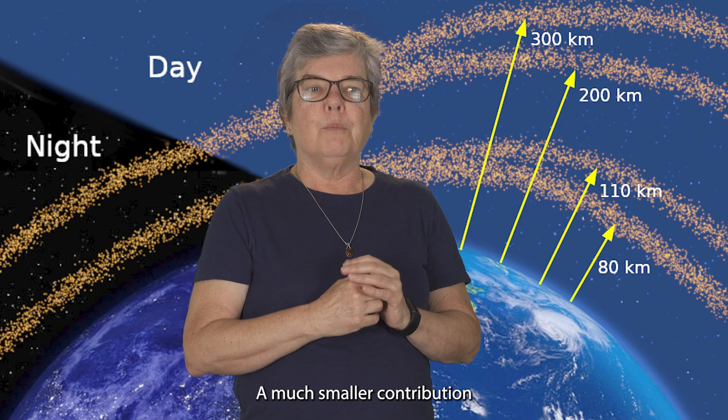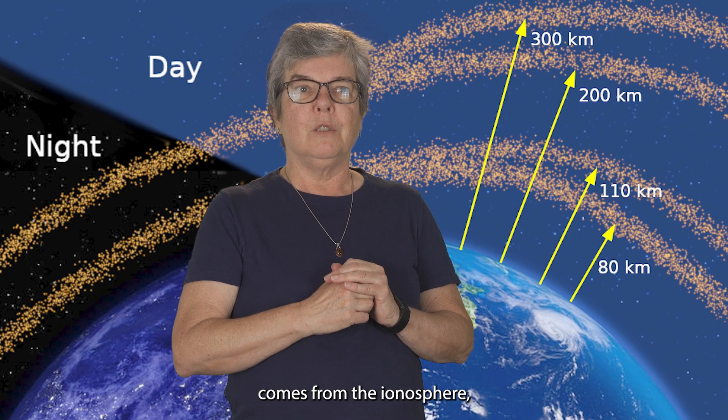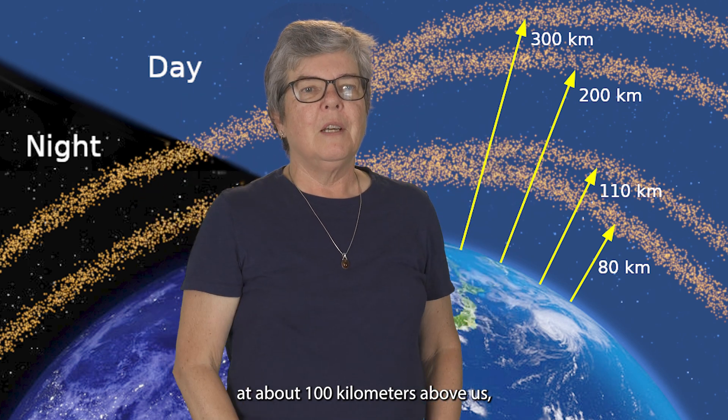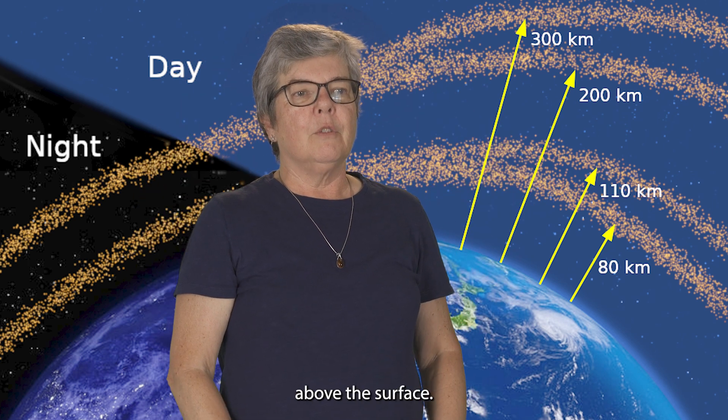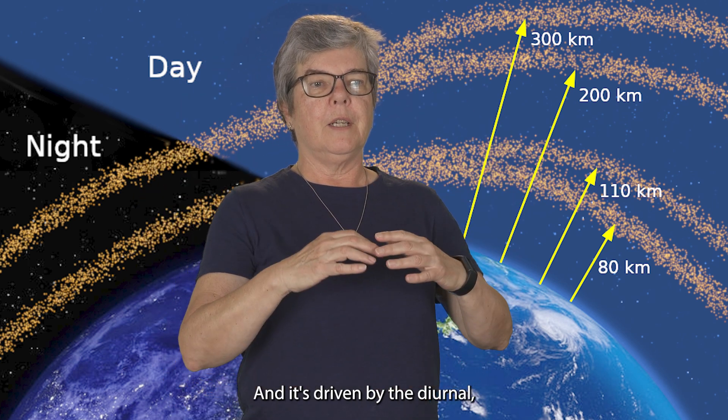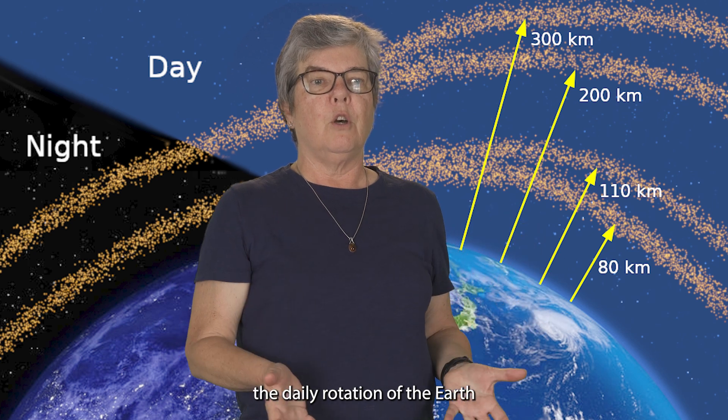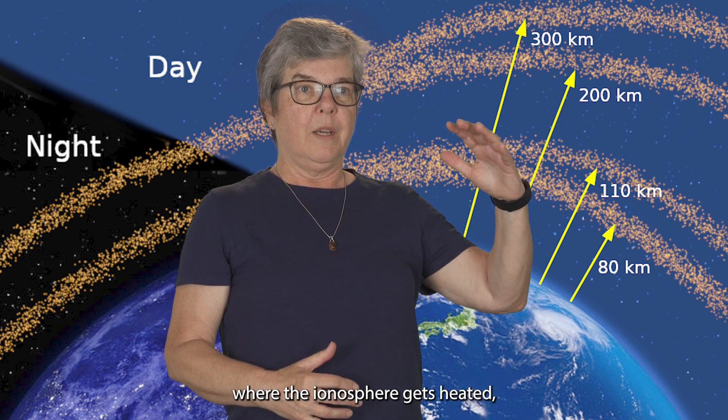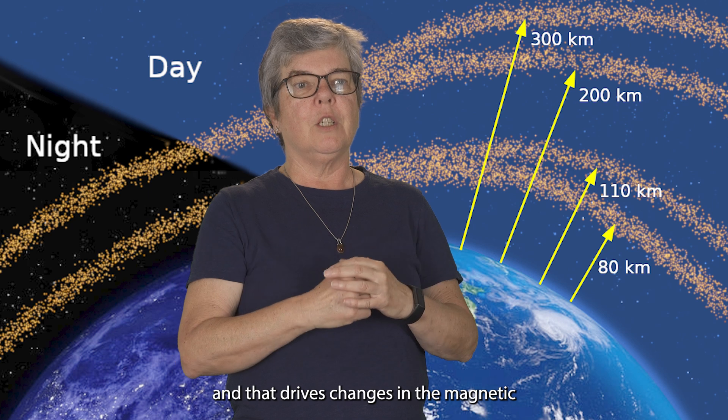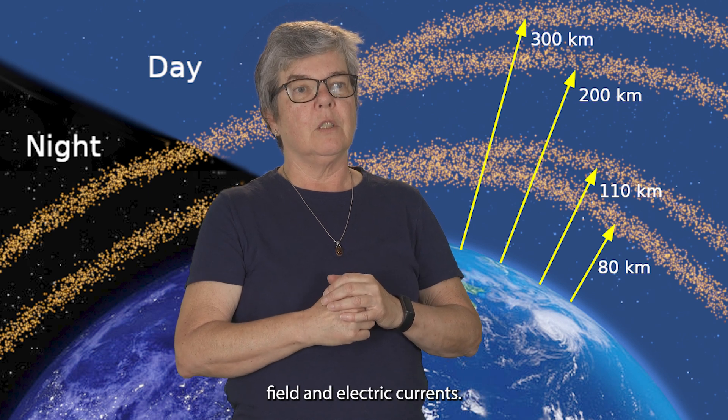A much smaller contribution comes from the ionosphere, which starts at about 100 kilometers above the surface. And it's driven by the diurnal or the daily rotation of the Earth under the Sun, where the ionosphere gets heated and that drives changes in the magnetic field and electric currents.